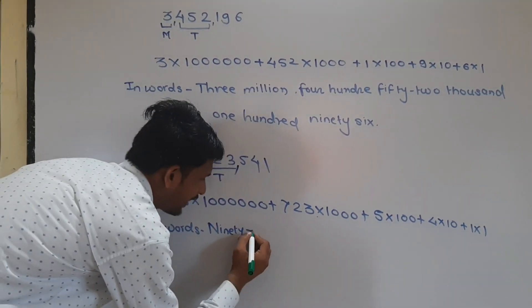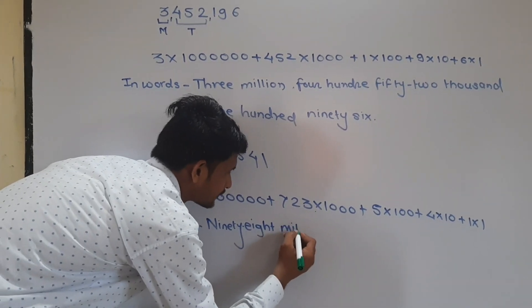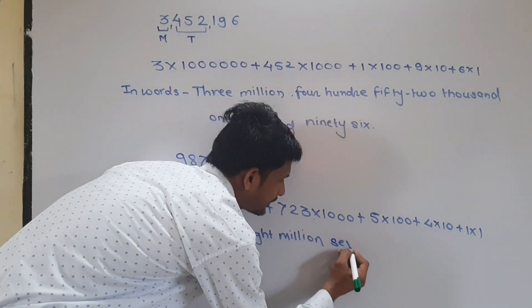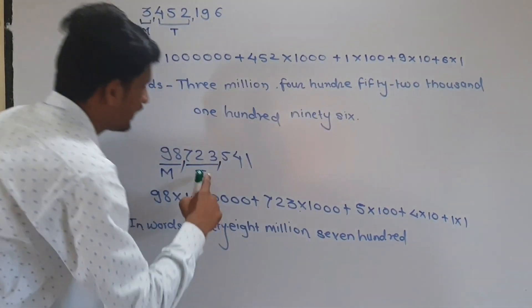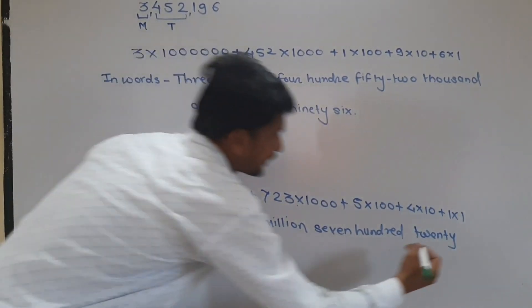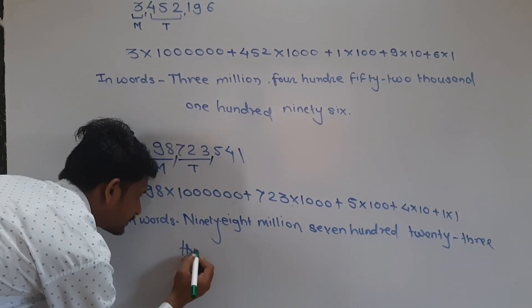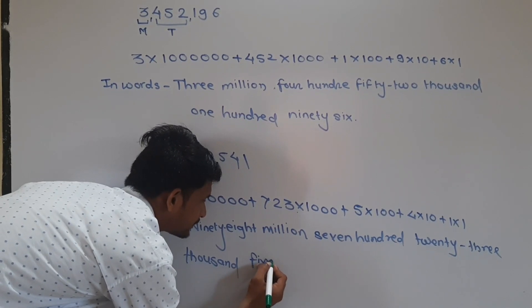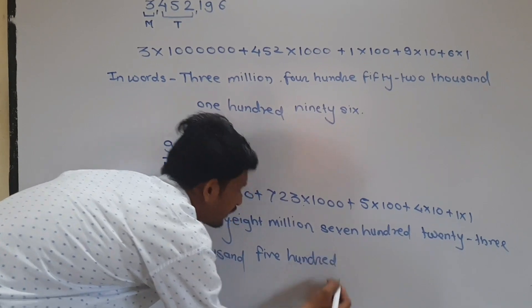In words, that number is: ninety-eight million, seven hundred twenty-three thousand, five hundred forty-one.